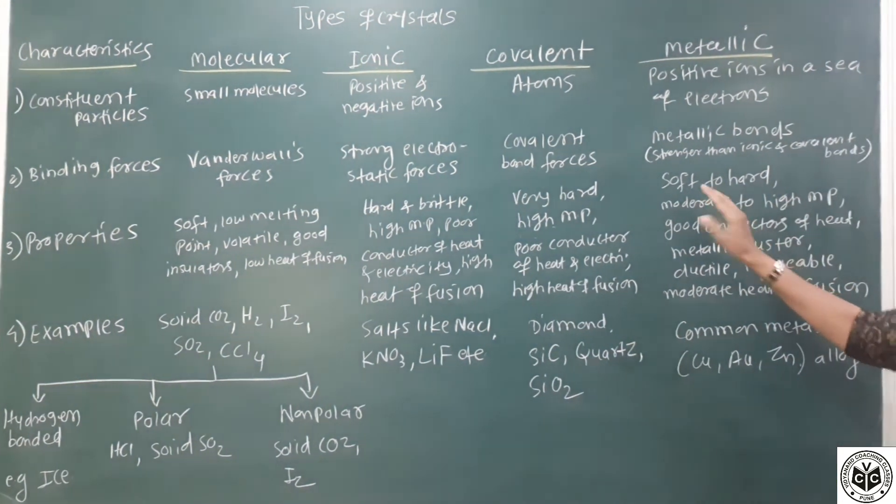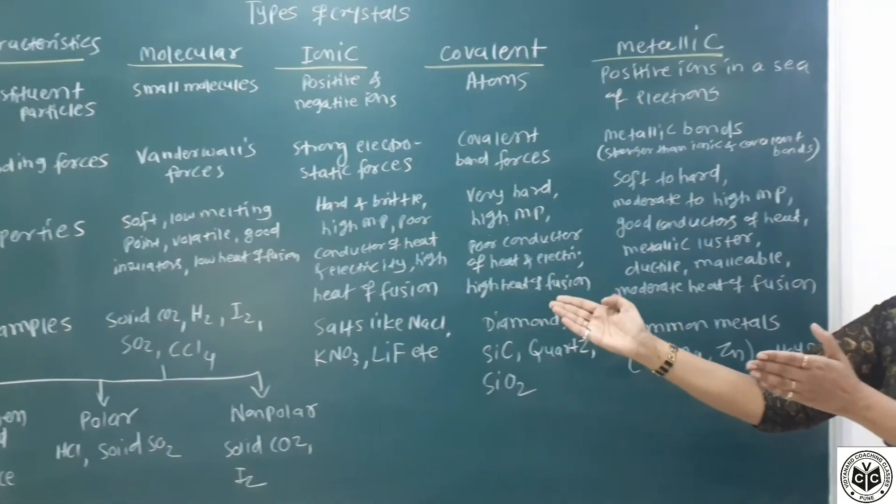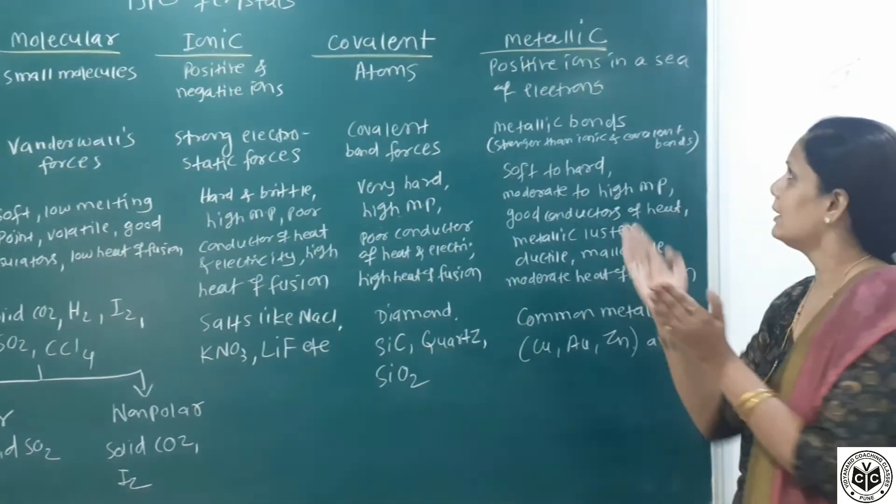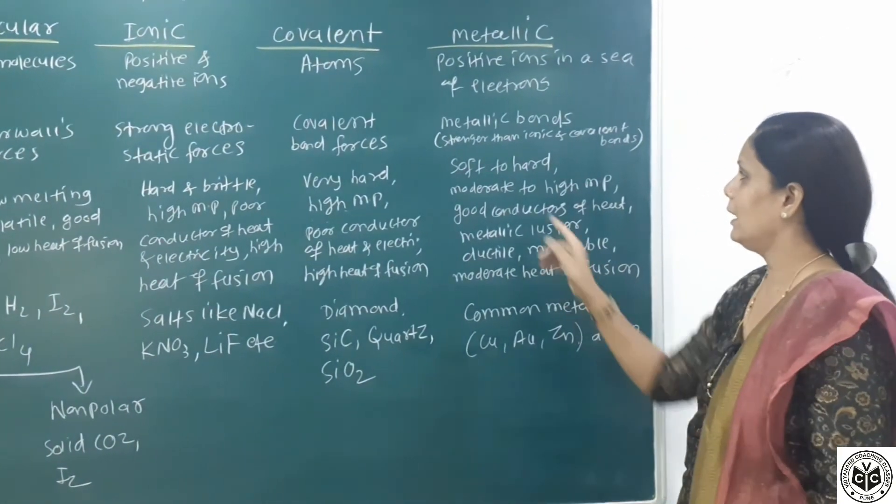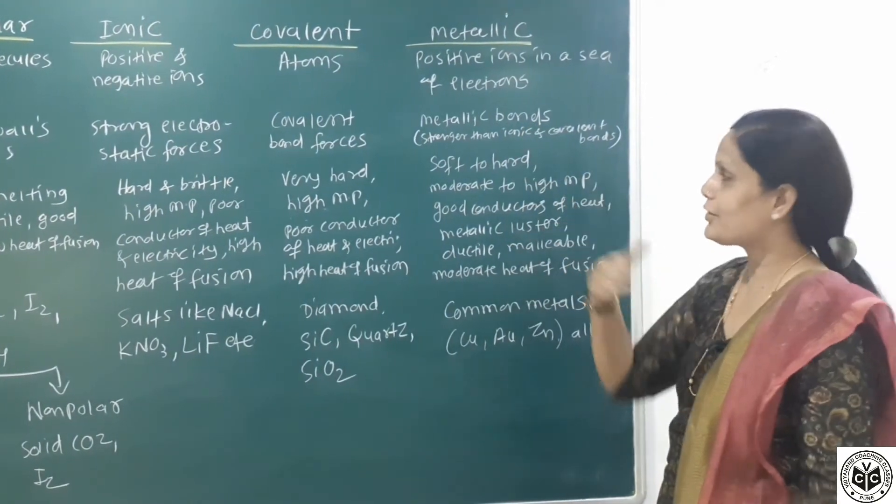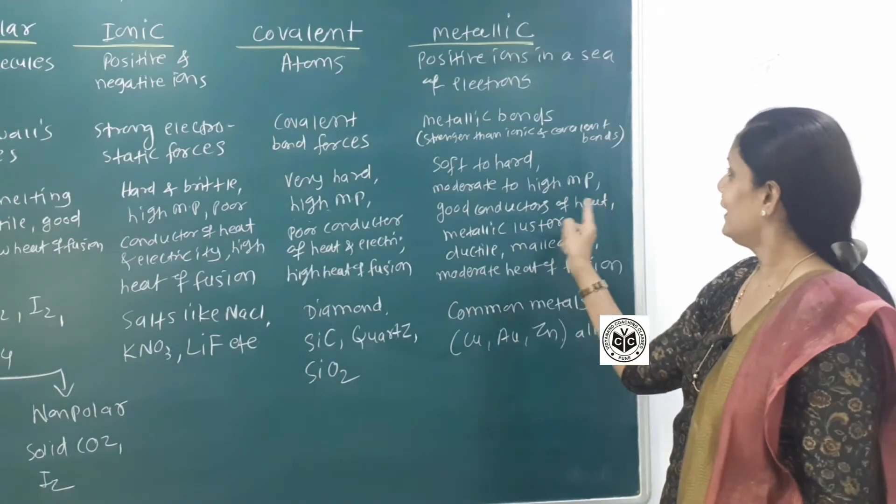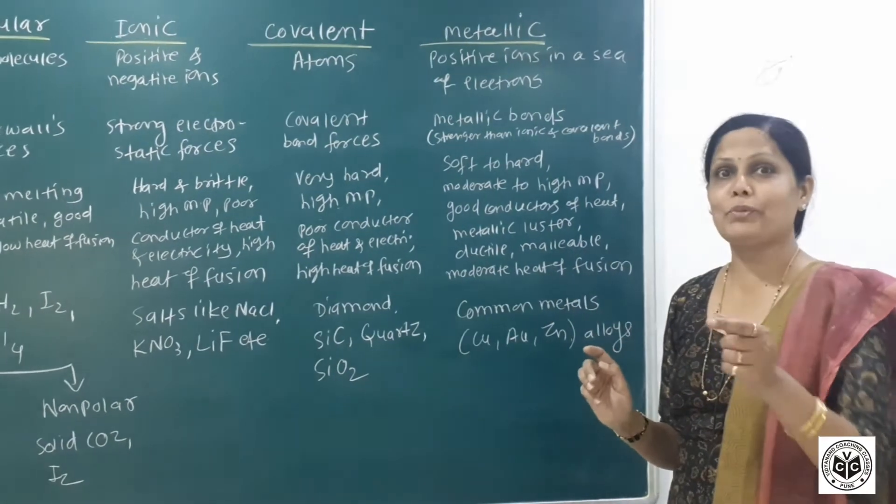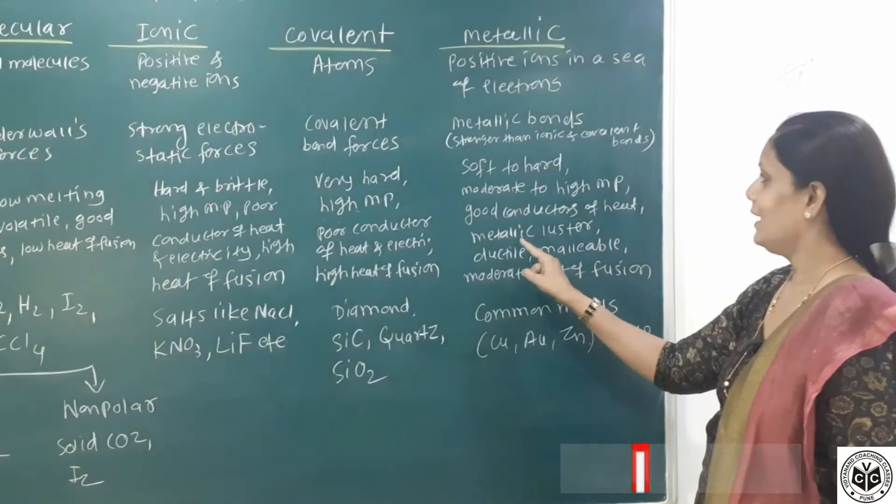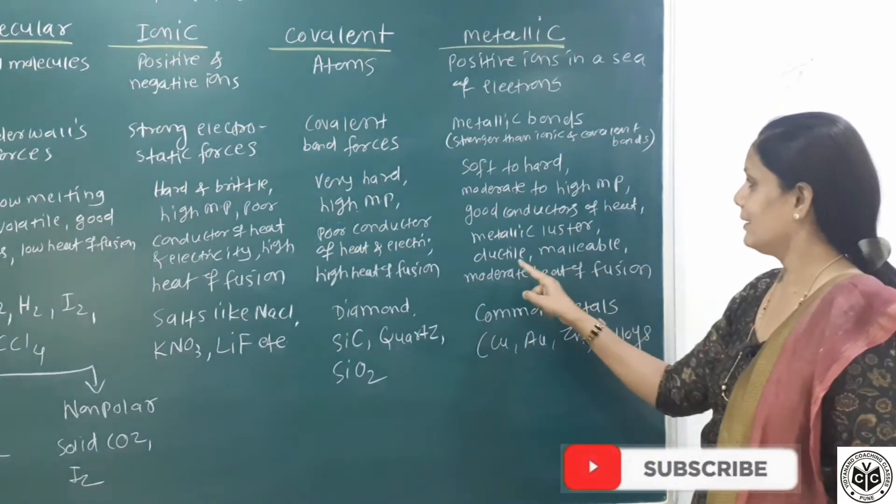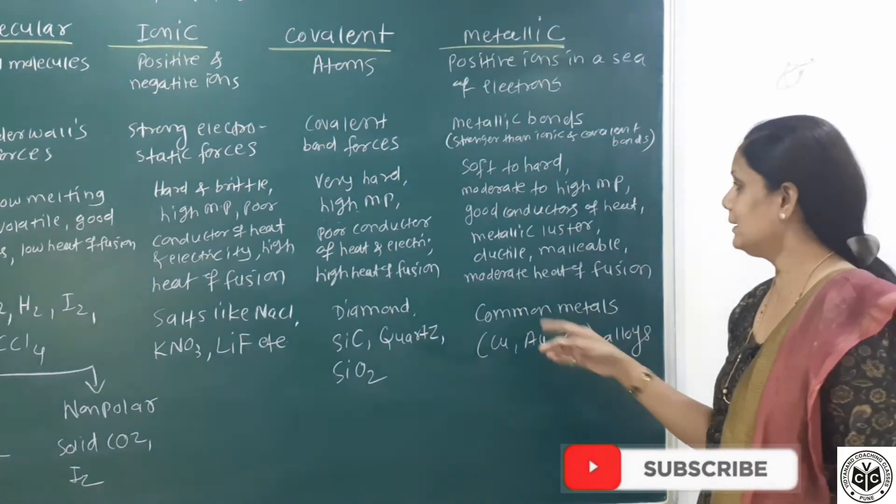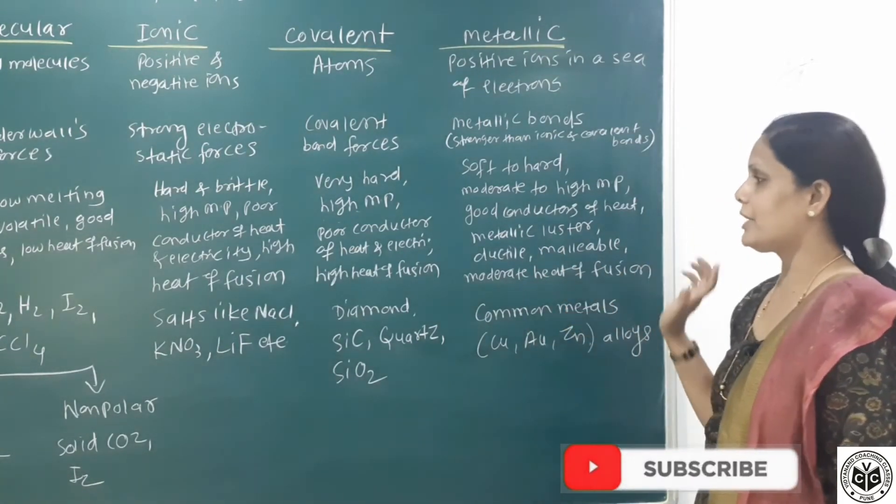Metallic solids, soft to hard. Some metals are soft and some metals are very hard, so that's why melting point is also moderate to high. Good conductors of heat and electricity because of mobility of electrons. They possess metallic luster, are ductile, malleable, and moderate heat of fusion is present.